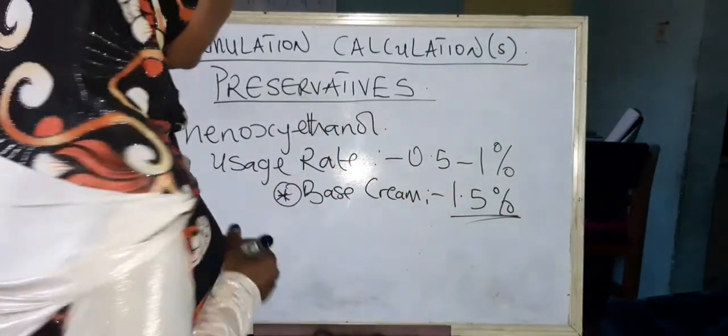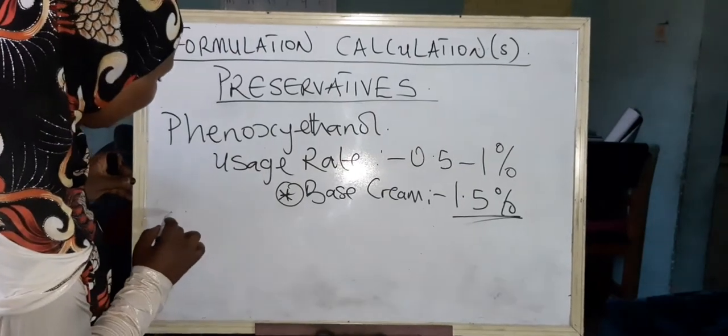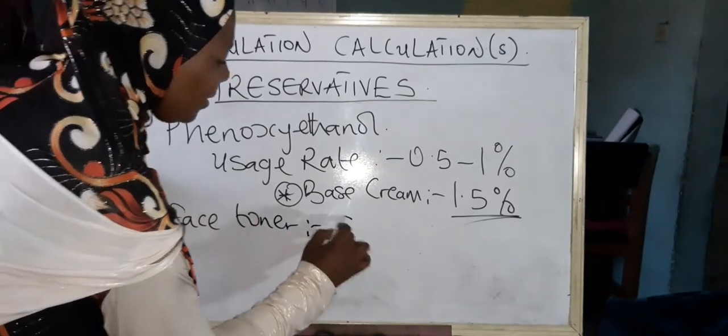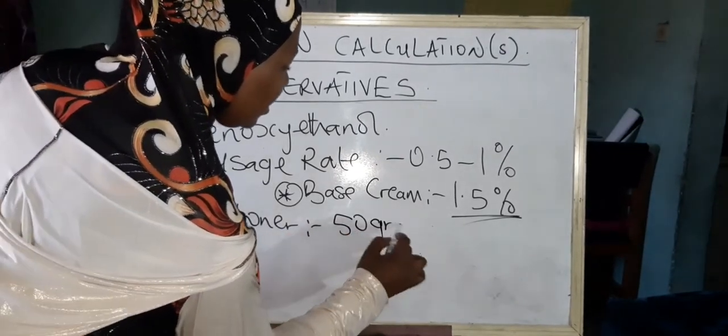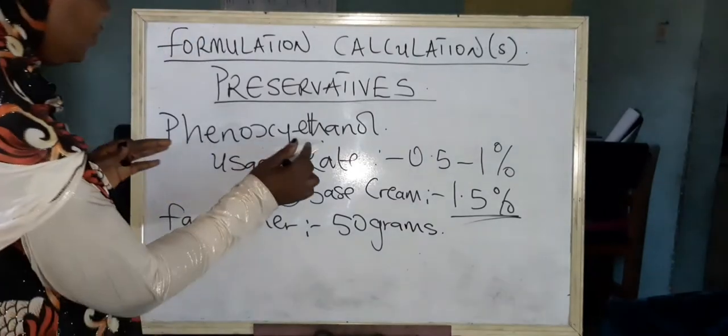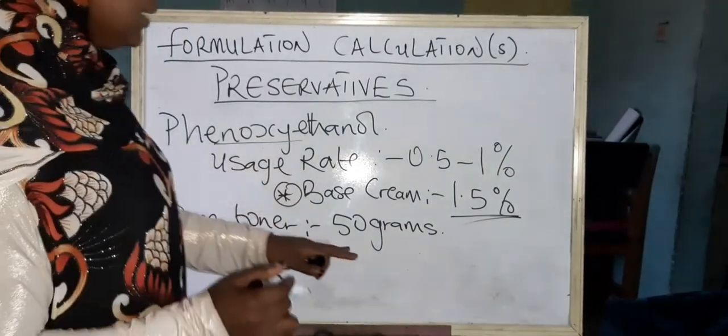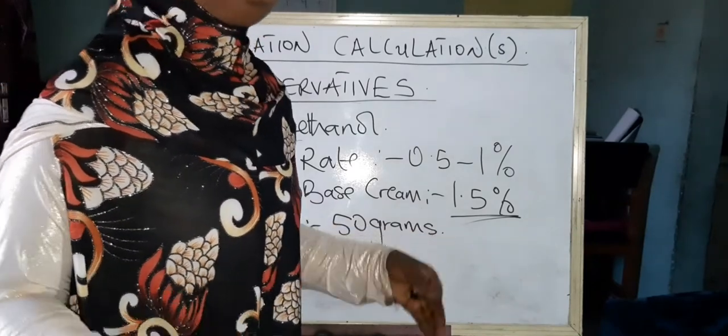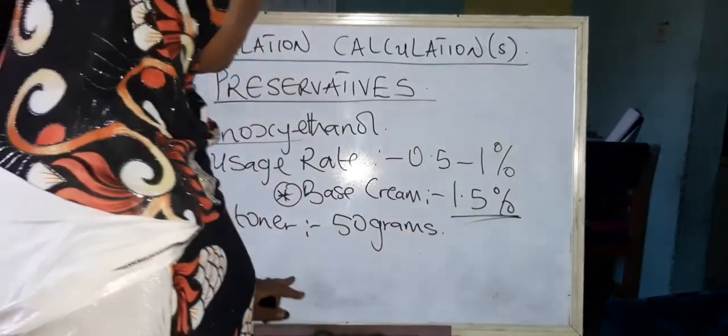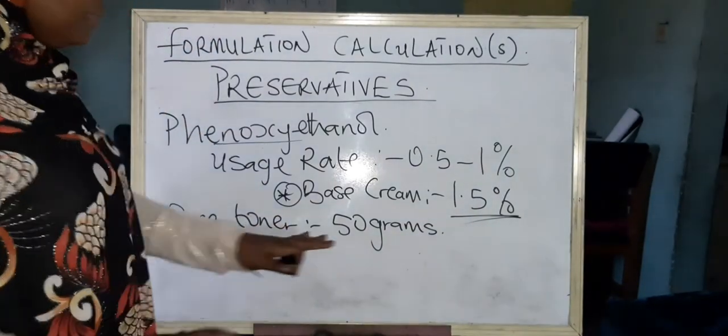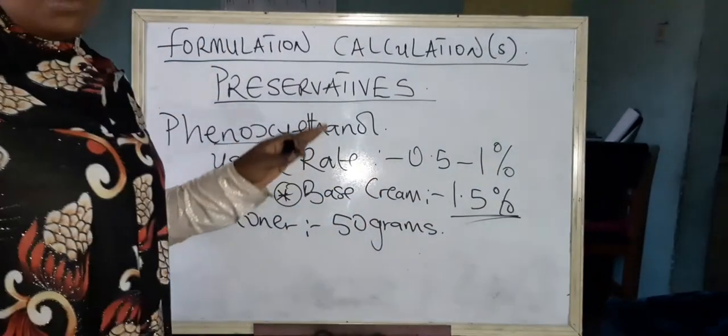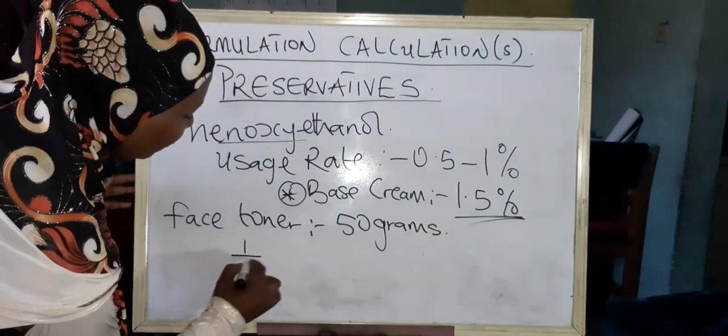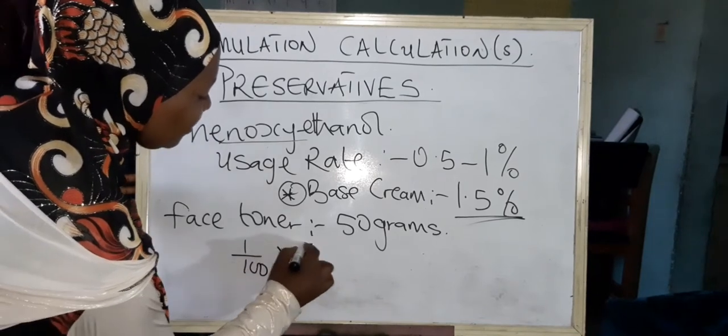So now let's go into the application itself to get the usage rate. Let's say we're making a face toner of about 50 grams, and our preservative of choice was the phenoxyethanol. As I said earlier, your preservative is usually the last. I like to add it last at the end of my formulation. So it's about 50 grams and I want to add that preservative of about 1 percent usage rate. So we go this way: 1 over 100 times 50.